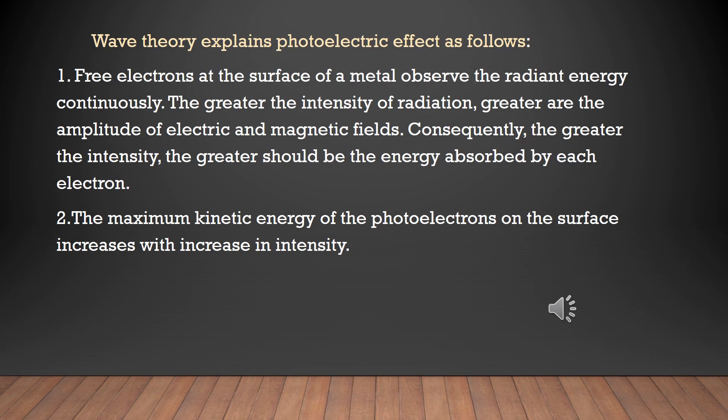Let us try and understand how wave theory explains photoelectric effect. Consider a metal which has free electrons at its surface. When light is incident on a metal surface, the free electrons at the surface start absorbing energy continuously. On increasing the intensity of radiation, the amplitude of electric and magnetic field was found to increase. Consequently, on increasing the intensity, the energy absorbed by each electron was also increasing. So according to wave theory, greater the intensity of radiation, greater should be the energy absorbed by each electron.